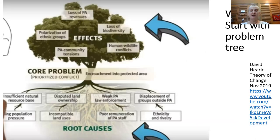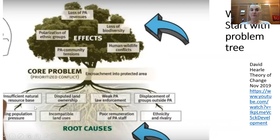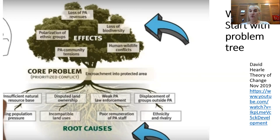Here is the first method — the problem tree. You establish the core problem, which here is encroachment into protected areas, with possible effects such as loss of biodiversity and conflicts between human groups. Then consider the root causes bringing about that core problem, such as disputed land ownership. You turn that root cause around into a positive outcome — secure land tenure — which in turn would result in the long-term goal or impact of reduced encroachment into a protected area.